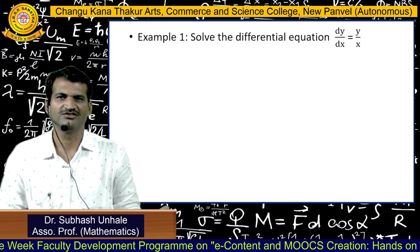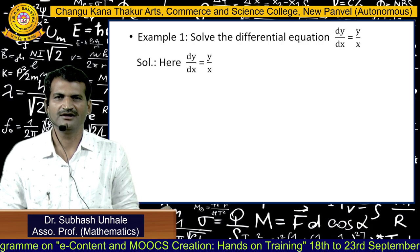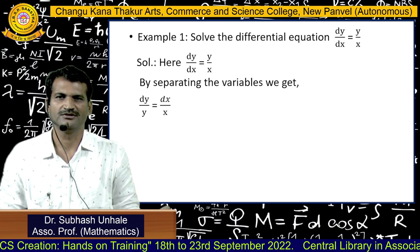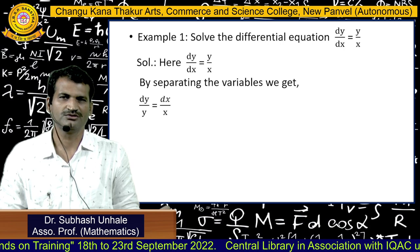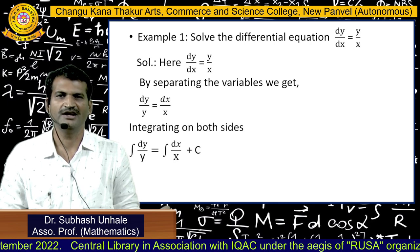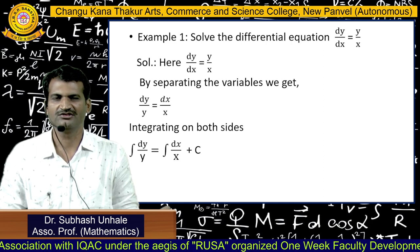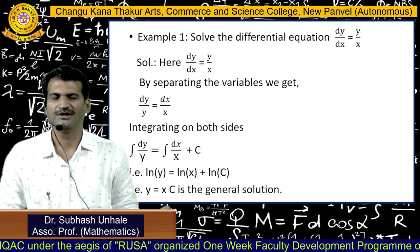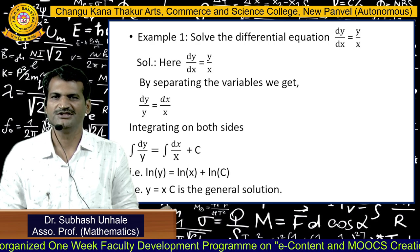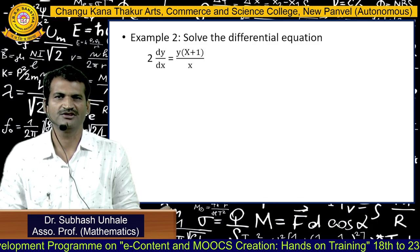For the first example, solve dy/dx = y/x. We write it in variable separable form: dy/y = dx/x. Integrating both sides: ln y = ln x + ln c, so the general solution is y = cx.